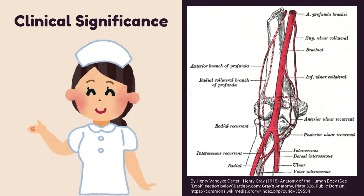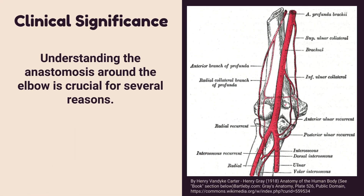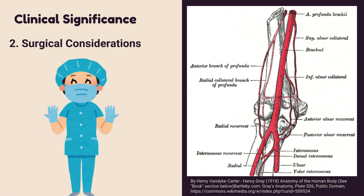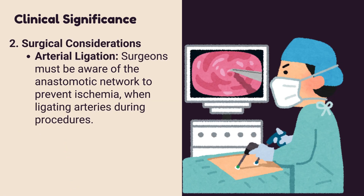Understanding the anastomosis around the elbow is crucial for several reasons. First, ensuring blood flow: the anastomosis ensures continuous blood flow to the forearm and hand, even if one of the major arteries is occluded. Second, surgical considerations: surgeons must be aware of the anastomotic network to prevent ischemia when ligating arteries during procedures.